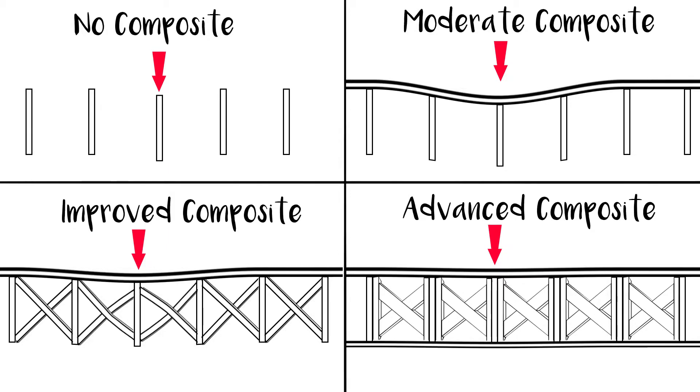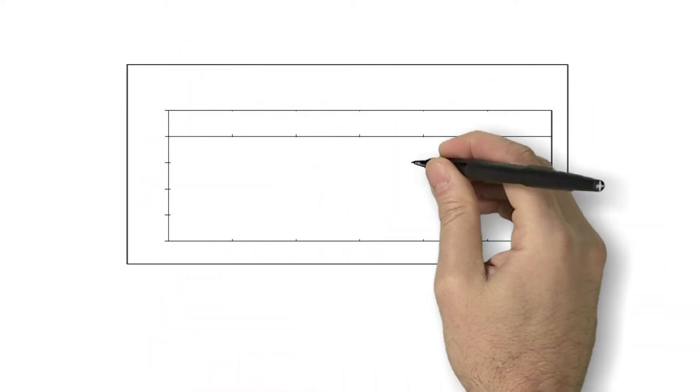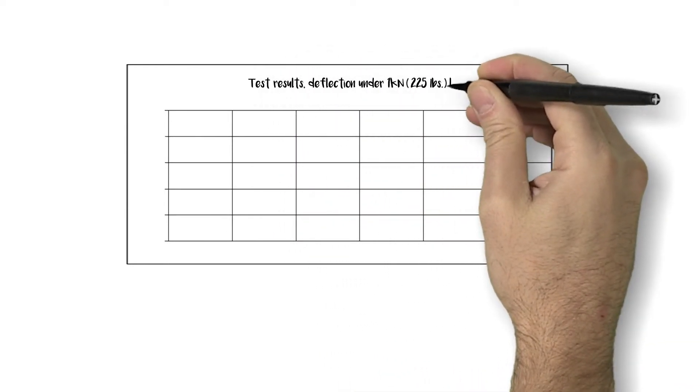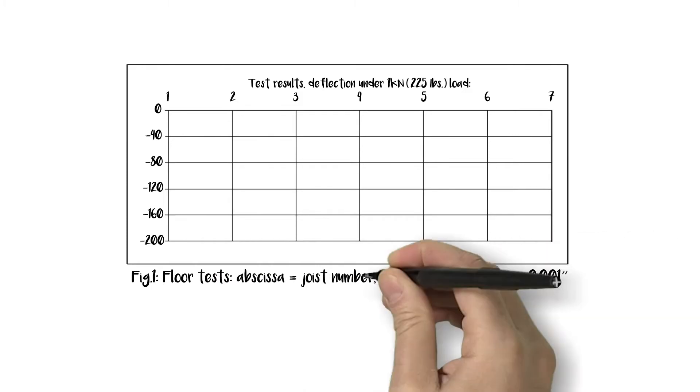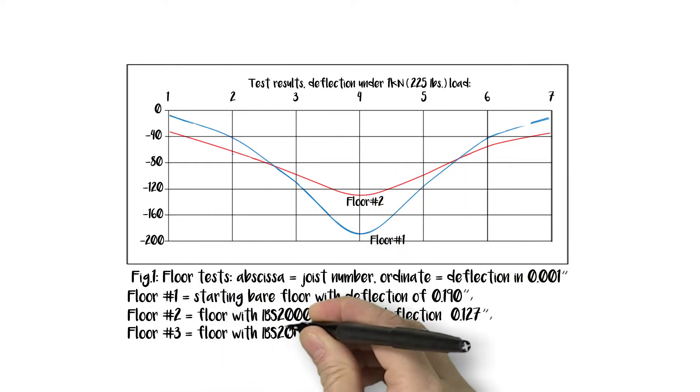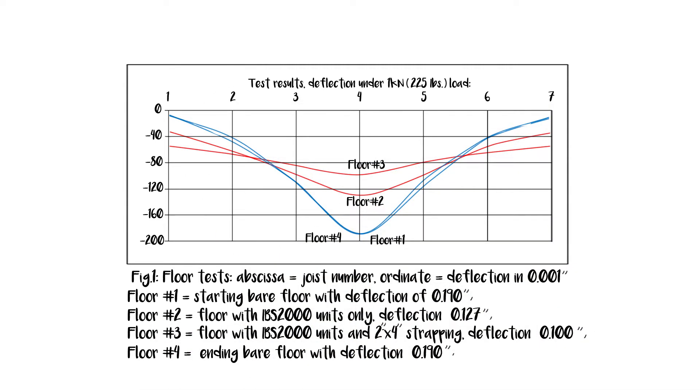That sounds great! What testing have you done to back this up? Yes, we conducted numerous tests with consistent results. Here's one of the tests, witnessed by Louisiana Pacific engineers. The graph shows results of a 7-joist wide floor loaded at center joist. We tested bare floor, then we added IBS 2000 alone, then added strapping to the IBS 2000 floor, and then finally bare floor again.